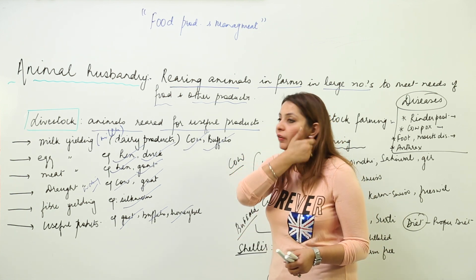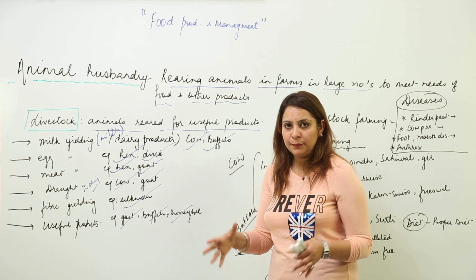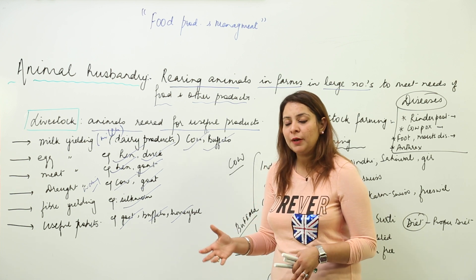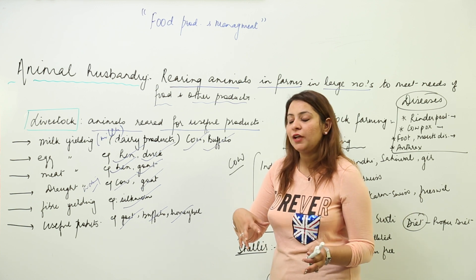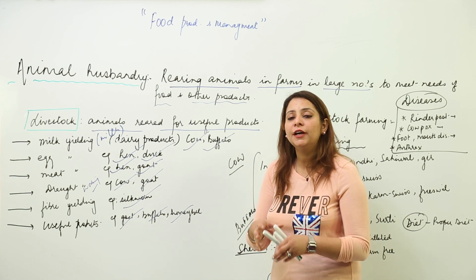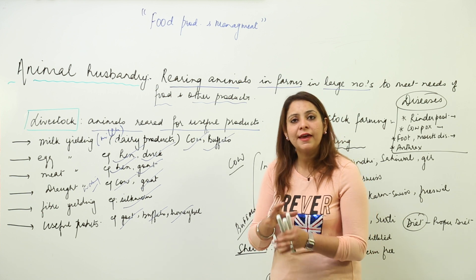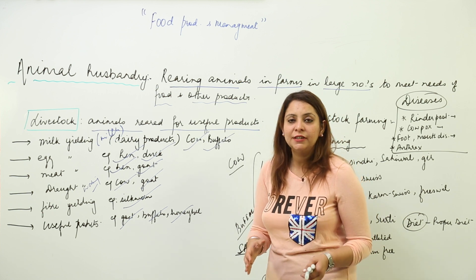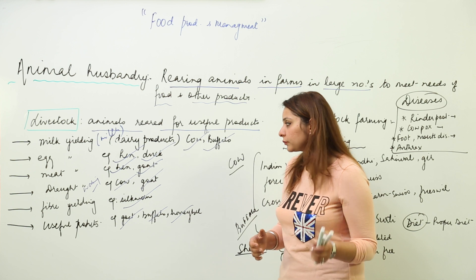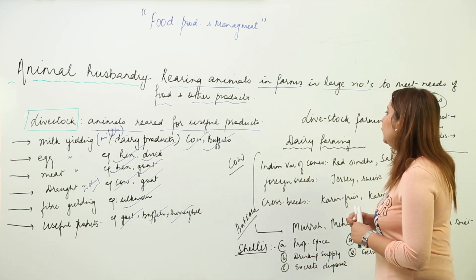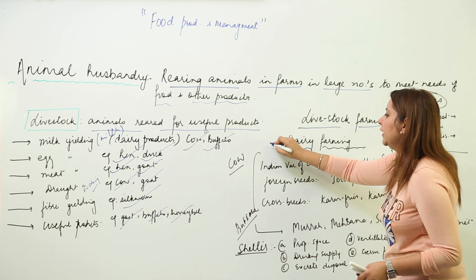Livestock is very important and should be reared in a proper manner. That is why we carry out different types of farming — like poultry farming and dairy farming — where we keep dairy or poultry animals and take care of their shelter, food, diseases, and everything, because we are rearing them for a useful purpose.